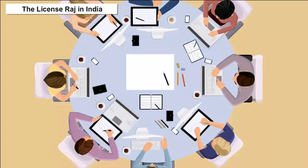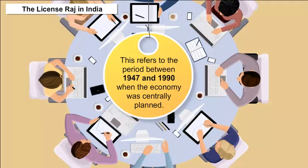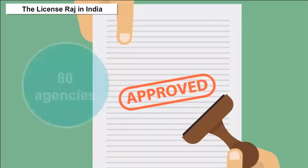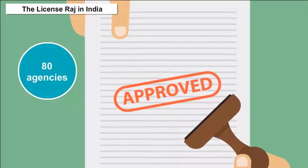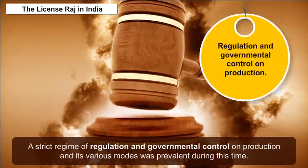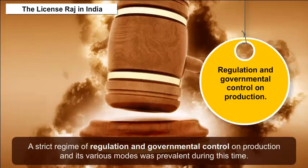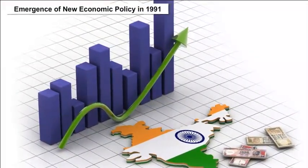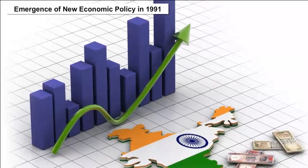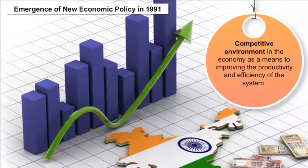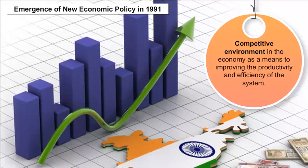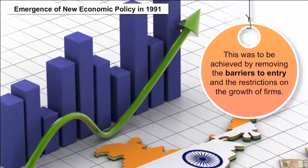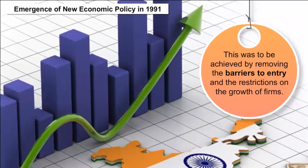Recent policy in India has relaxed some import restrictions. The License Raj in India refers to the period between 1947 and 1990 when the economy was centrally planned; approval from 80 agencies was needed before a license to produce something could be obtained, with a strict regime of regulation and governmental control over production. The thrust of the New Economic Policy of 1991 was towards creating a more competitive environment in the economy to improve productivity and efficiency, achieved by removing barriers to entry and restrictions on the growth of firms.